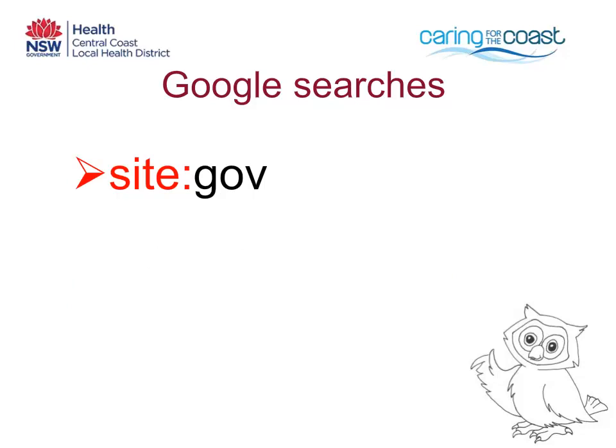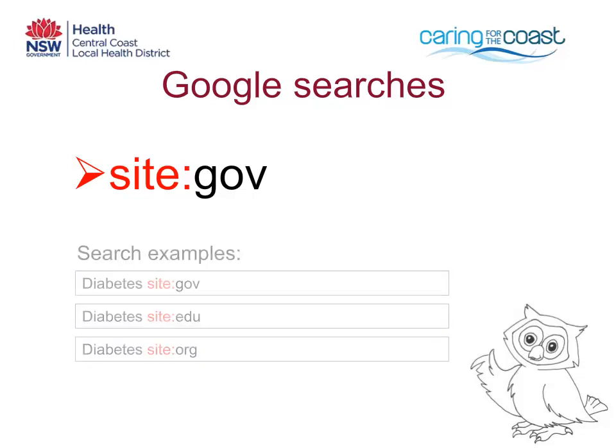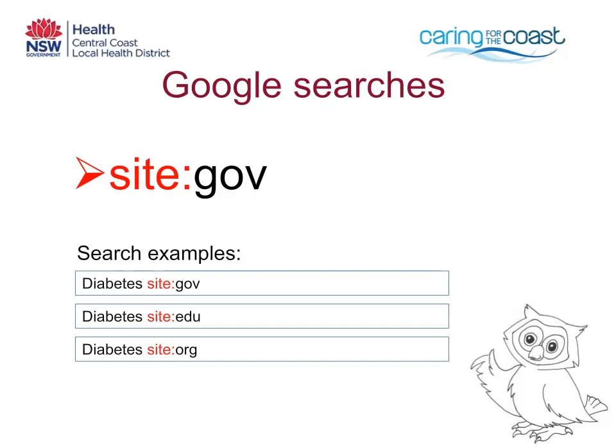You can limit your search to websites produced by governments, educational institutions or organisations by using site colon. For example, using site:gov after your search term will return government websites. Site:edu will return websites from educational institutions. And site:org will return organisational websites, usually non-government and not-for-profit.